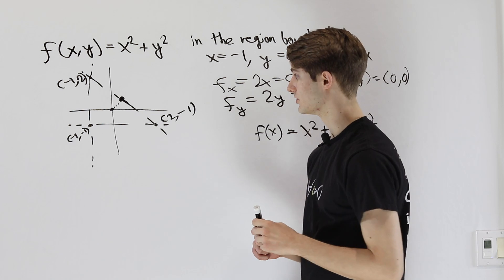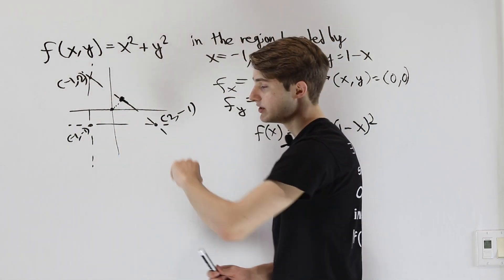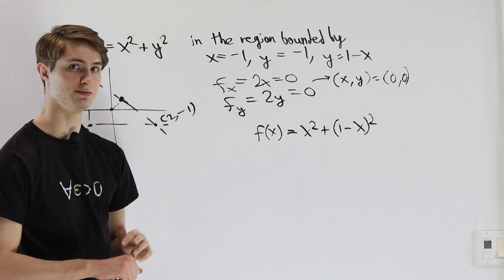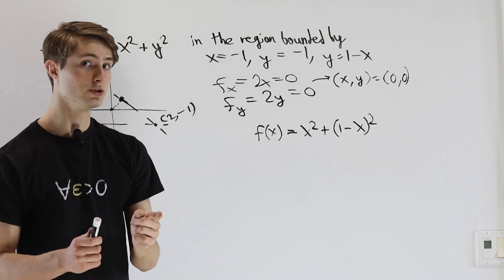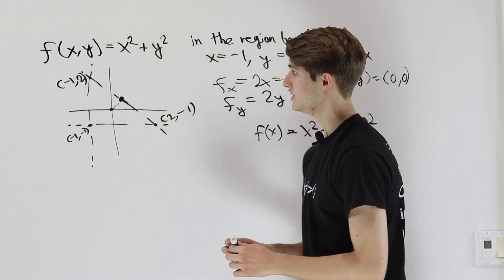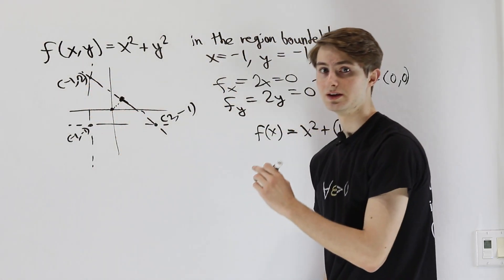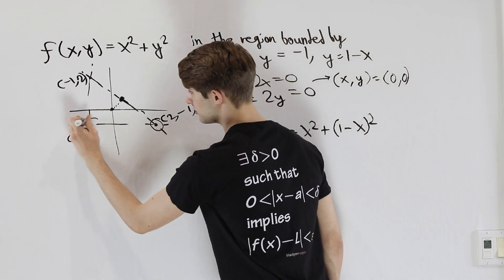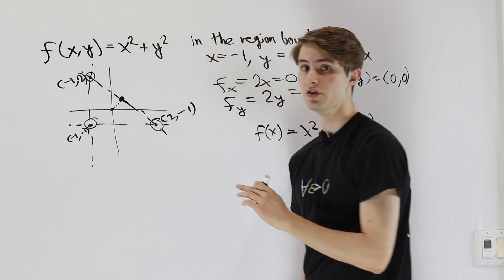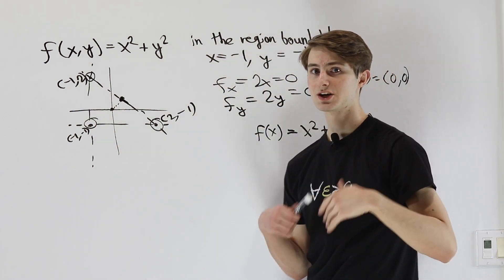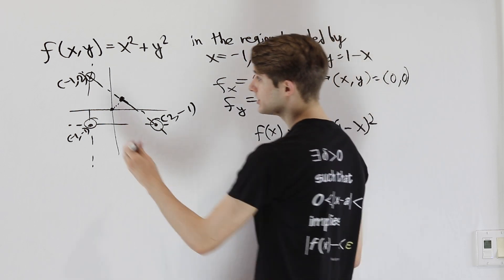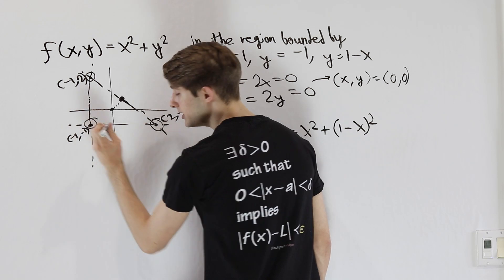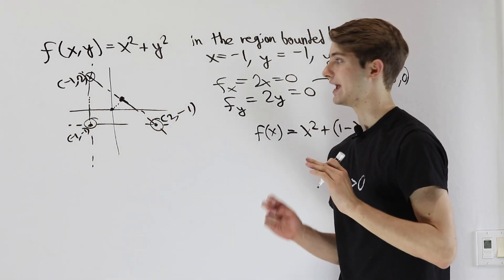There's one other thing we have to look at, which is that each of these boundaries looks very much like a single variable optimization problem. But if we're looking at a single variable optimization problem along this boundary, we have to check the edges — the boundaries of the boundaries — which are these three corners. Those also could potentially be the maximum or minimum values, because even along the boundary, that value of the function could be increasing up to that final corner.